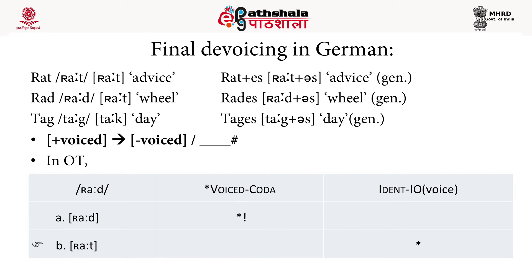For final devoicing in German, the input form /rad/ surfaces as [rat], and /rates/ surfaces as [rades]. Similarly, /tag/ becomes [tak], but in the genitive it becomes [tages]. So /g/ is devoicing to /k/ and /d/ is devoicing to /t/. Basically, in German there cannot be any voiced coda — if the coda is voiced it must change to a voiceless sound. If it is not in coda position, voicing can be retained.